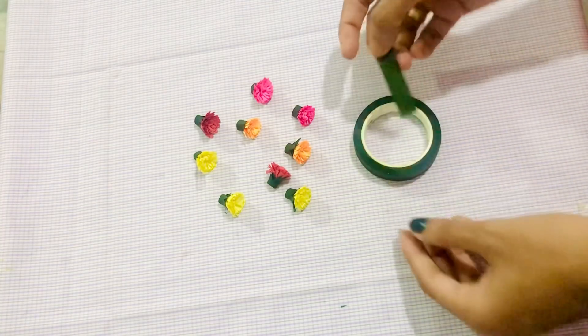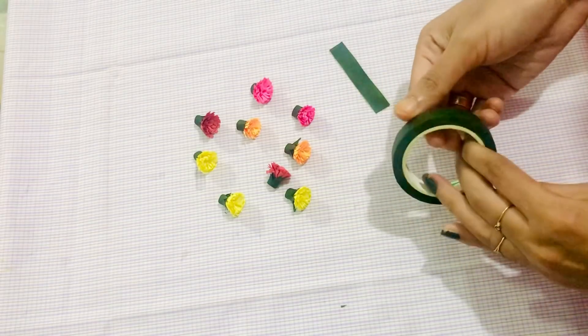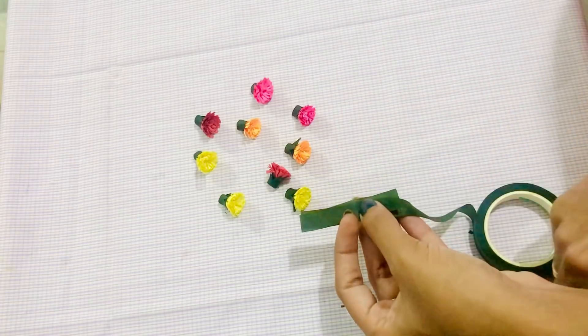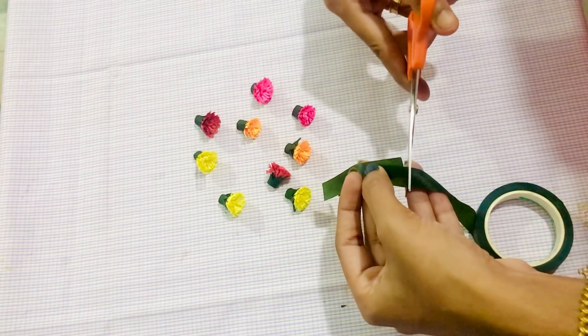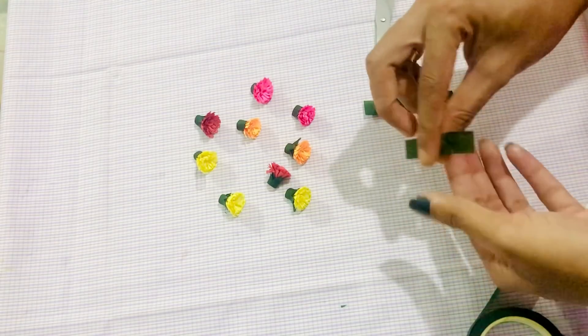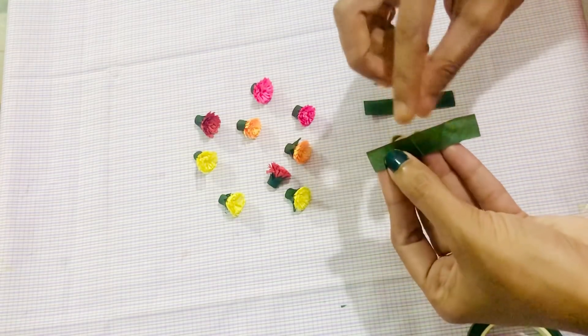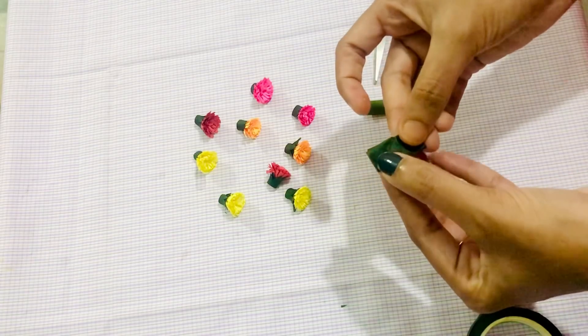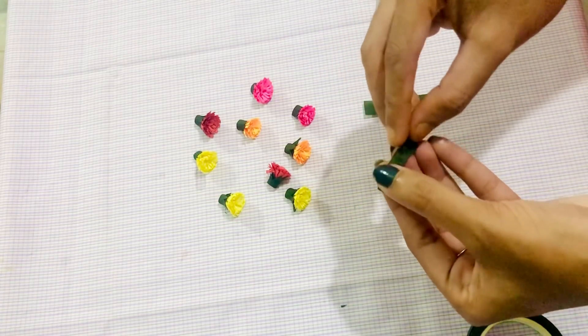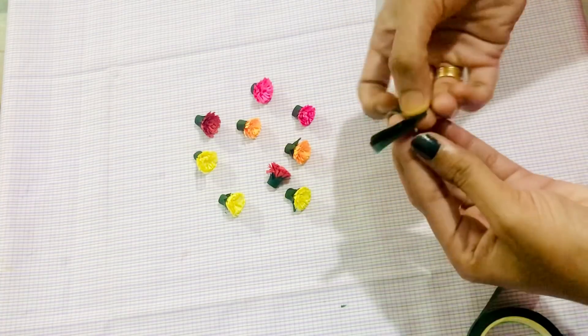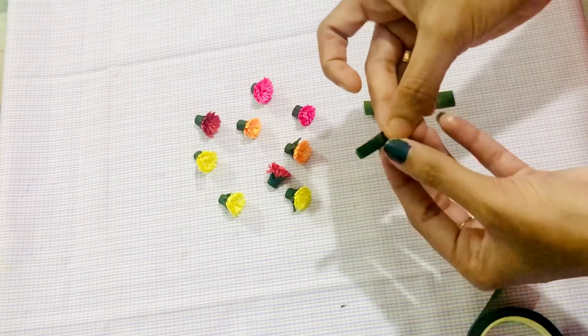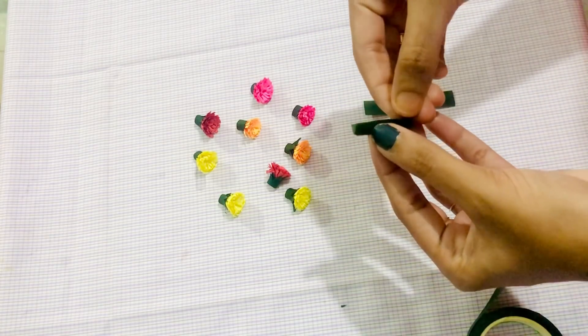Let's add some leaves. I will cut the green tape in 6cm. I will take the green tape and put the paper on the top. I will try to cut the leaves.